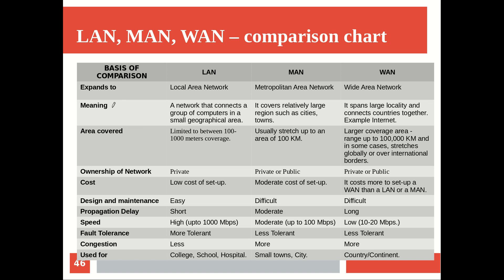Looking at the basic definition: a local area network connects a group of computers in a small geographical area; a metropolitan area network covers a relatively large spread across cities; and a wide area network connects large localities and countries together - the so-called internet. The area covered by a LAN is limited to about 100 to 1000 meters, as we already discussed.